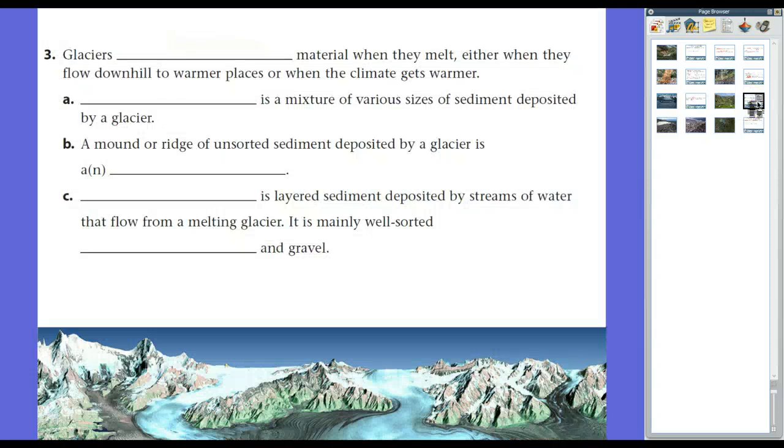Let's talk about glacial erosion and deposition some more. Glaciers will deposit material when they melt. And when glaciers melt, we call it retreating glaciers because they back up. Either when they flow downhill to warmer places or when the climate gets warmer. At the end of the Ice Age, you had a lot of glacial deposits that left stuff there. Now, the stuff that's left over is what we call till. And glacial till is a mixture of various sizes of sediment deposited by a glacier. And we'll see it in a couple ways.